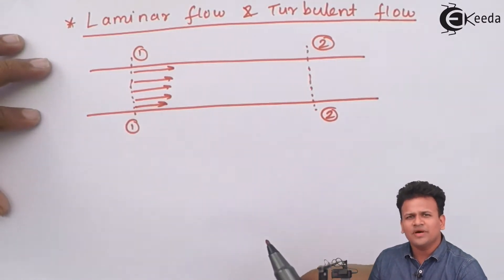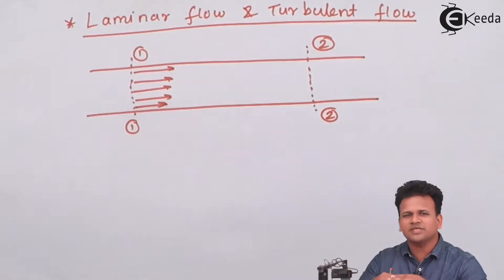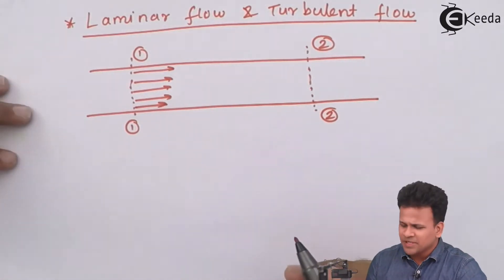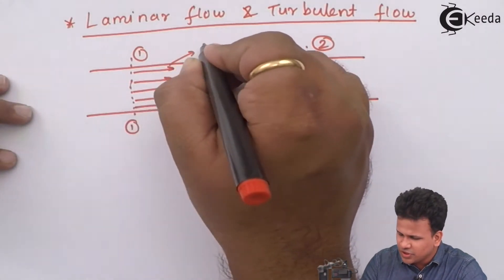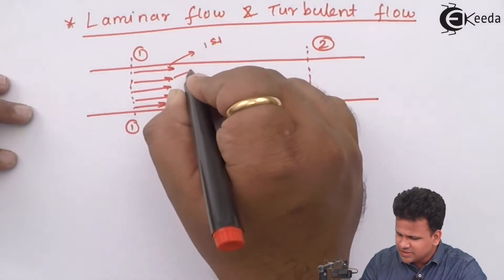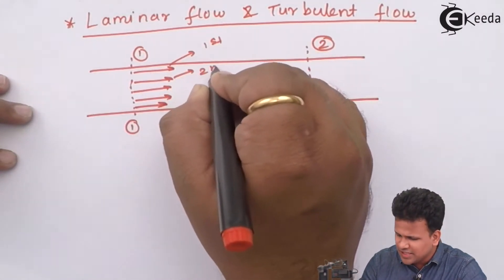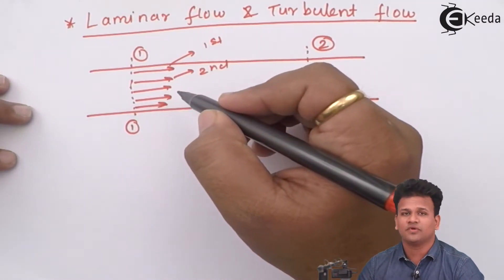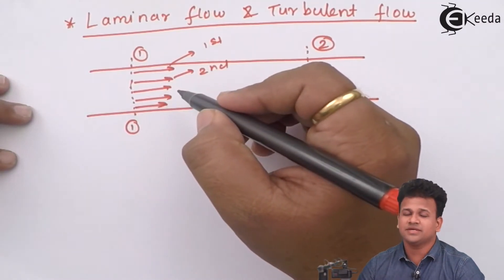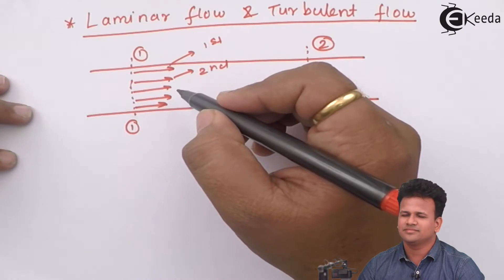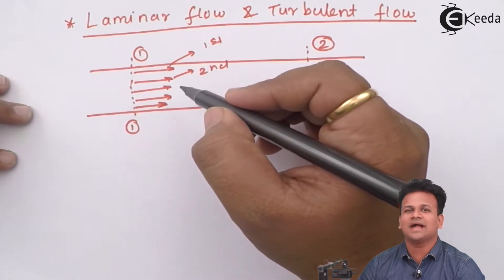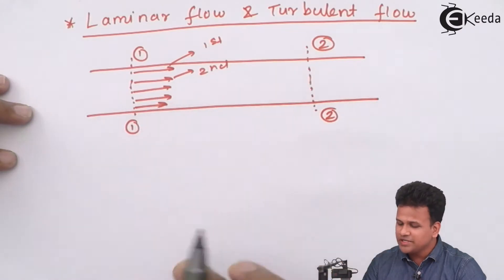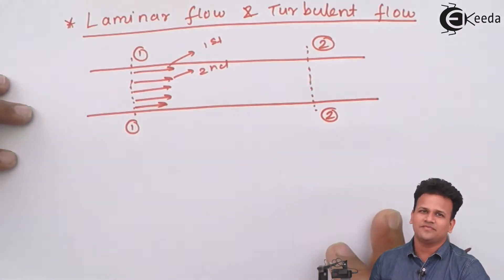In laminar flow, there is no intermixing of the adjacent layers of the liquid. The first layer and the second layer remain separate — there is no mixing of the adjacent layers. This flow is called laminar flow.